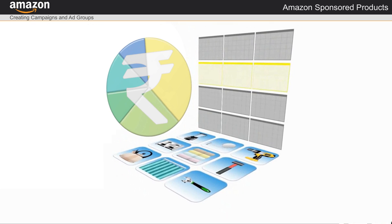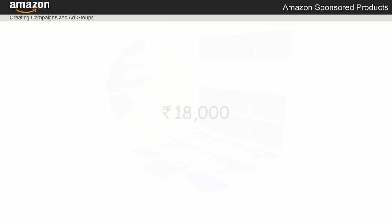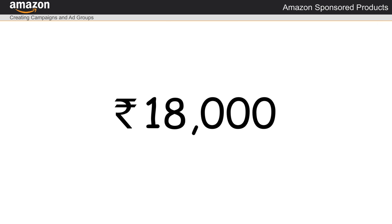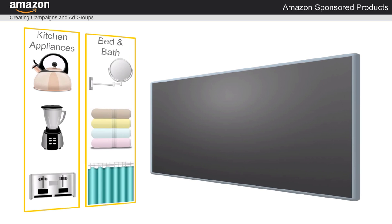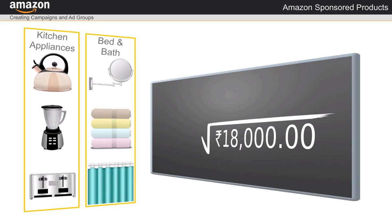For example, I have a budget of about rupees 18,000 per quarter for my campaigns promoting new kitchen appliances and bed and bath products. From this, I have determined that I have a daily budget of approximately rupees 200 that I can use over a 90-day period.